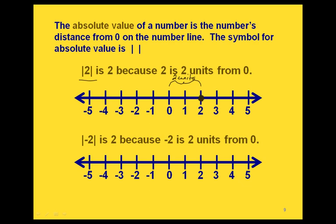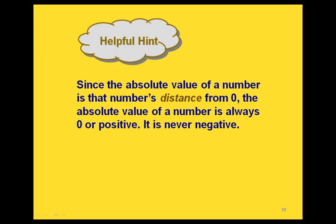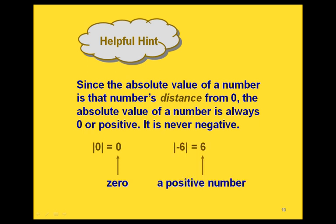The absolute value of 2 is just 2. Now if we look at the absolute value of negative 2: if we graph negative 2 and go from negative 2 to zero, that's also a total of two units' distance. So the absolute value of negative 2 is also 2. Since we're talking about the number's distance from zero, the absolute value is always going to be either zero or positive — it will never give us a negative value. The absolute value of zero is zero, and for a negative number, absolute value gives a positive result, e.g., the absolute value of negative 6 is positive 6.